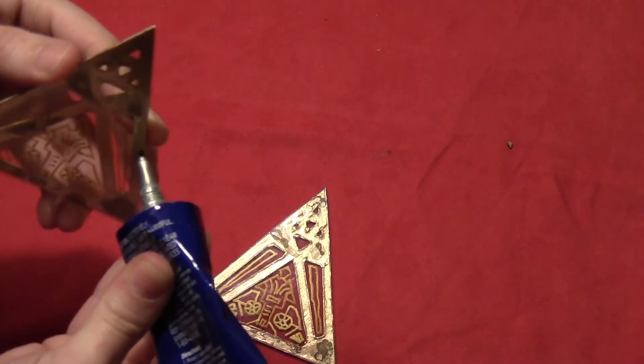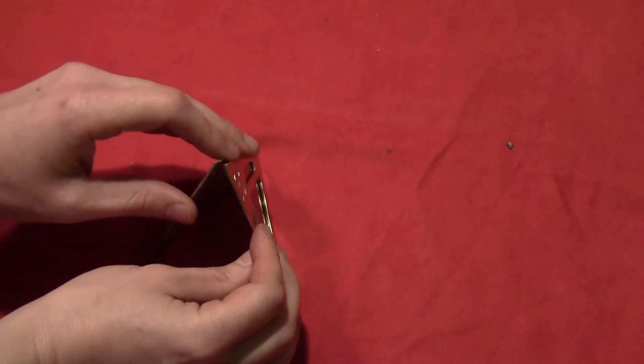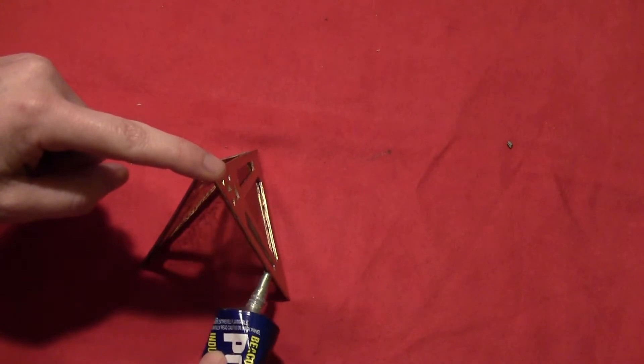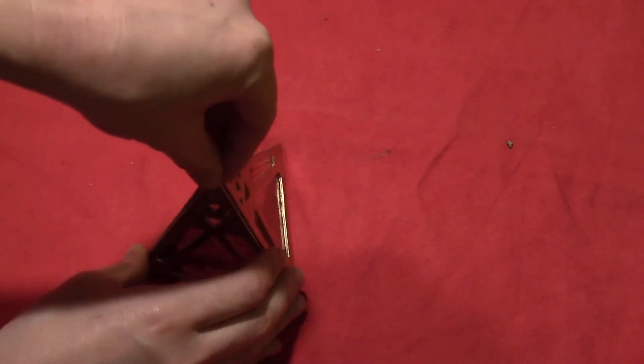Run a line of glue along the inside edge of one of the triangles and glue it to the second triangle. Then run glue along those edges and glue on the third triangle, and just hold them until they're all dry.